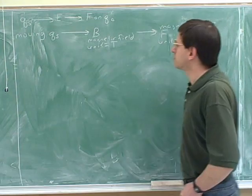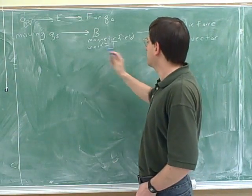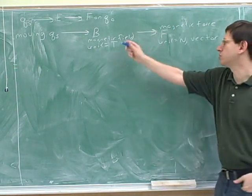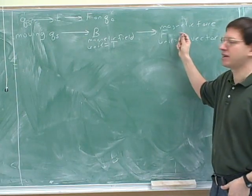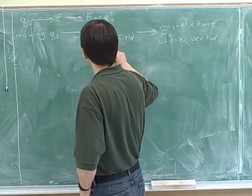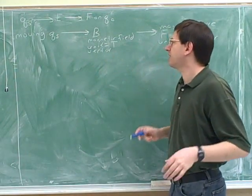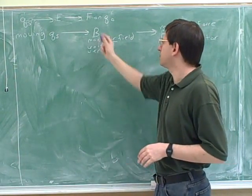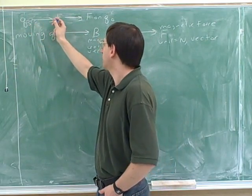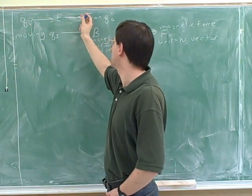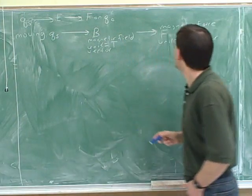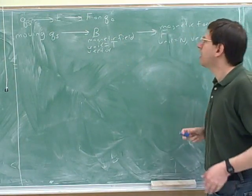So would we expect the magnetic field to be a vector or a scalar? A vector, because it's going to be determining the magnetic force. It makes sense that it should be a vector because the force is a vector. The key thing to emphasize is the analogy between the two flowcharts: just as source charges create electric fields which generate electric forces, moving charges create magnetic fields, and those exert magnetic forces.